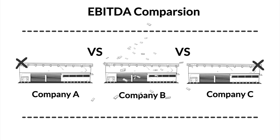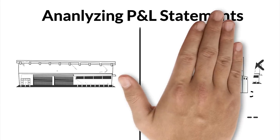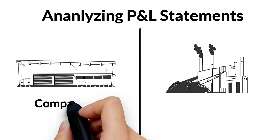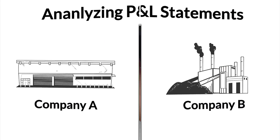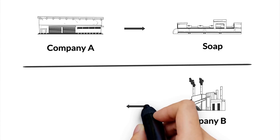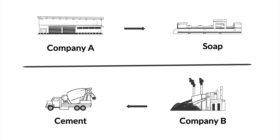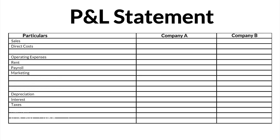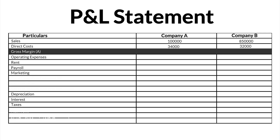Let's understand the concept of EBITDA by analyzing the P&L statements of companies A and B, where A manufactures soaps and B is a cement company. The sales of company A stand at Rs. 1 lakh and those of company B stand at Rs. 85,000. Separating the direct costs from the revenue brings the gross profit of A and B to Rs. 66,000 and Rs. 53,000 respectively.